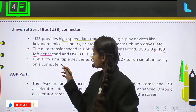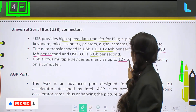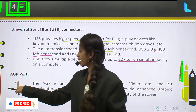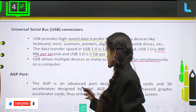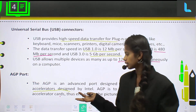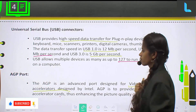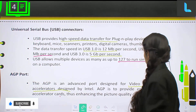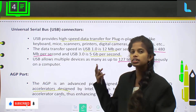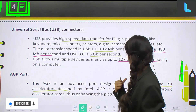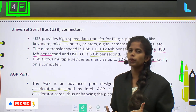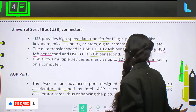USB allows multiple devices — as many as up to 127 — to run simultaneously on a computer. Next, what about AGP port? AGP port is called Accelerated Graphics Port. This is an advanced port designed for video cards and 3D accelerators, designed by Intel. AGP is used to provide enhanced graphic accelerator cards, thus enhancing the picture quality of the screen.